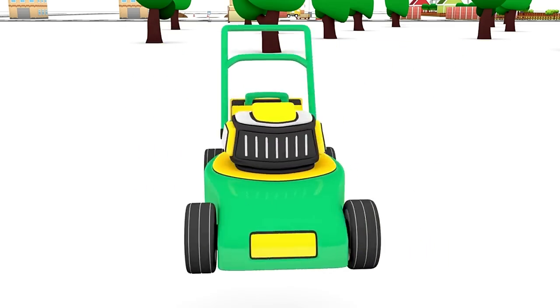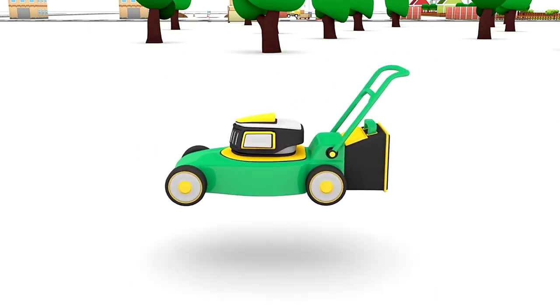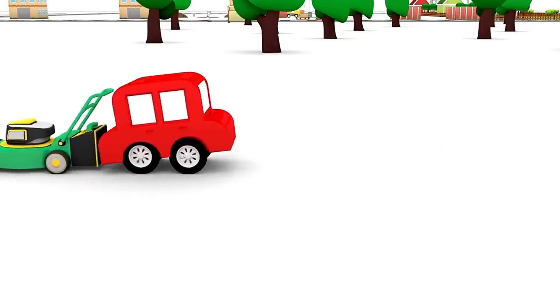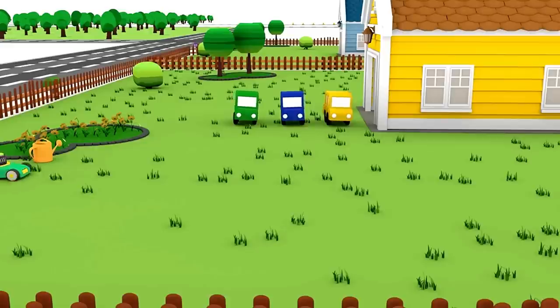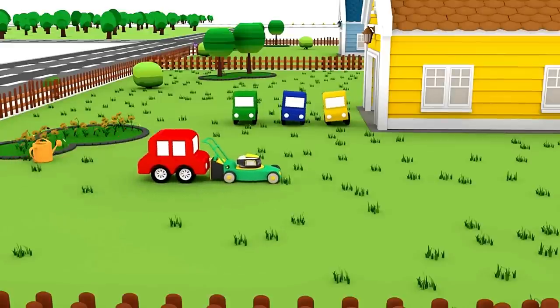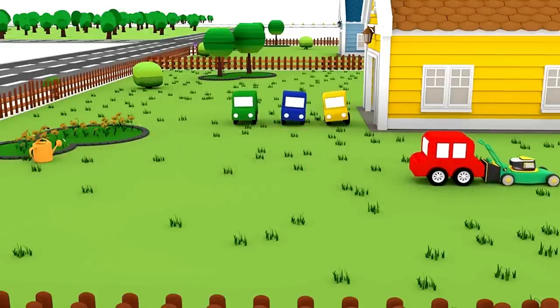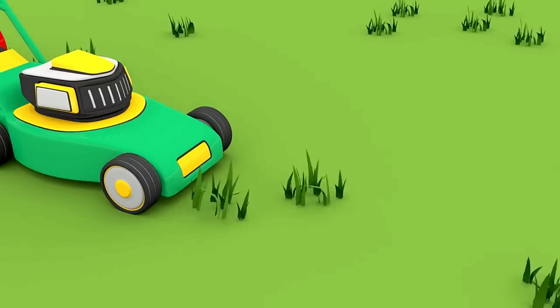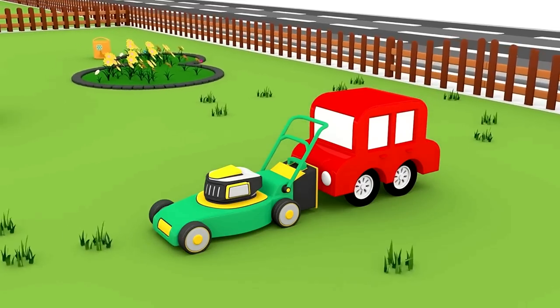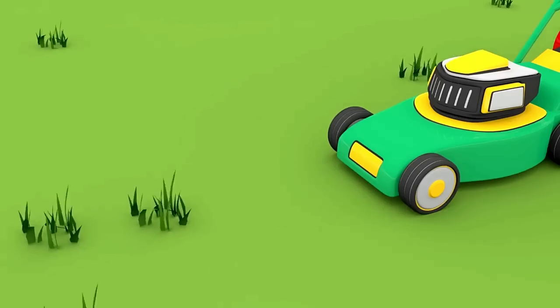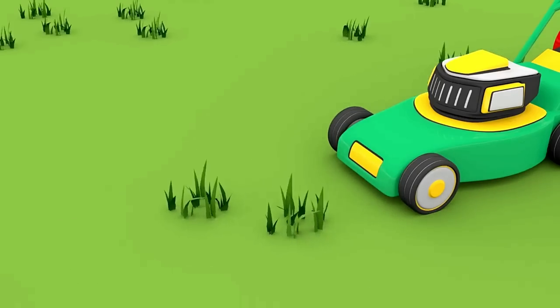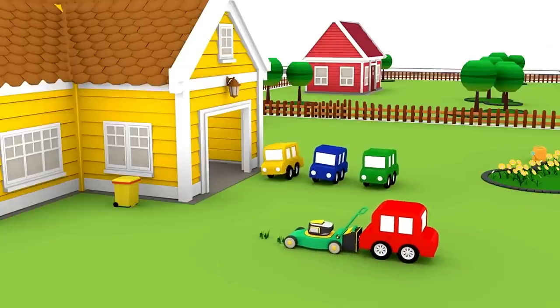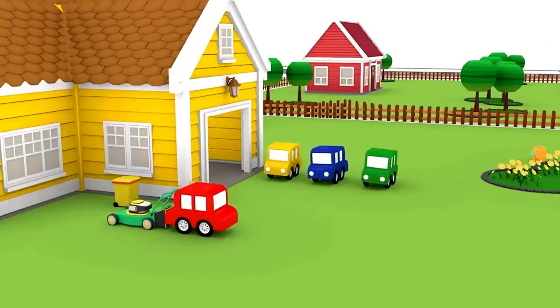The red car. He is doing it so fast. The blade is rotating and cutting the grass, which falls into the container. Very nice. And now let's empty the grass container.